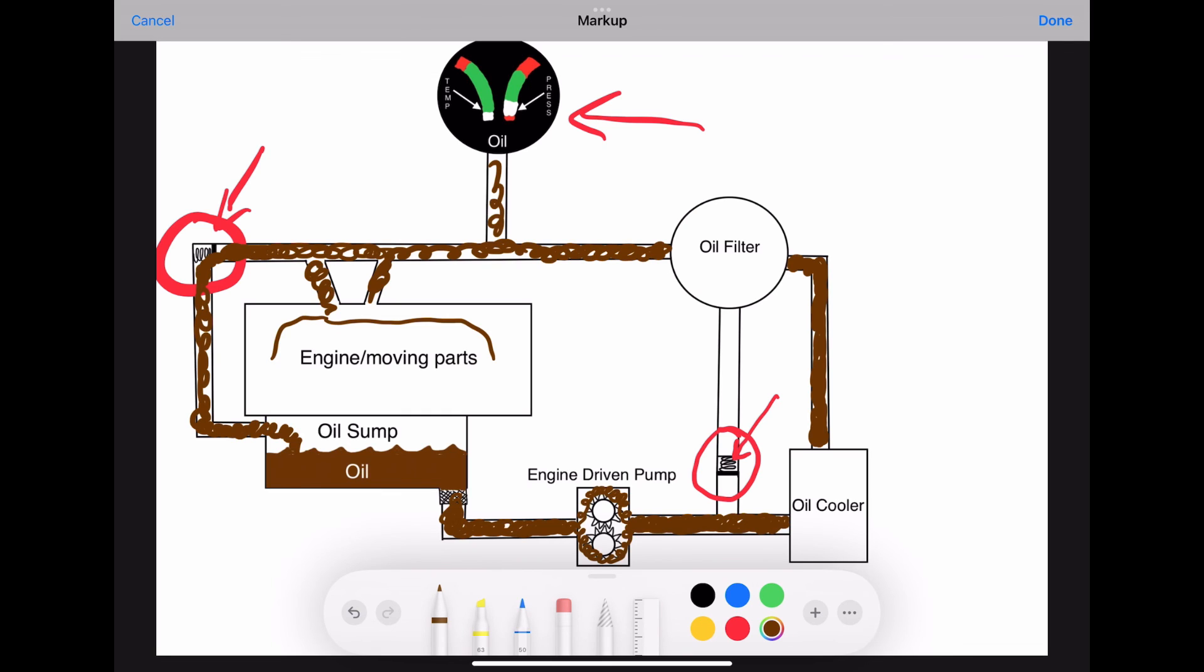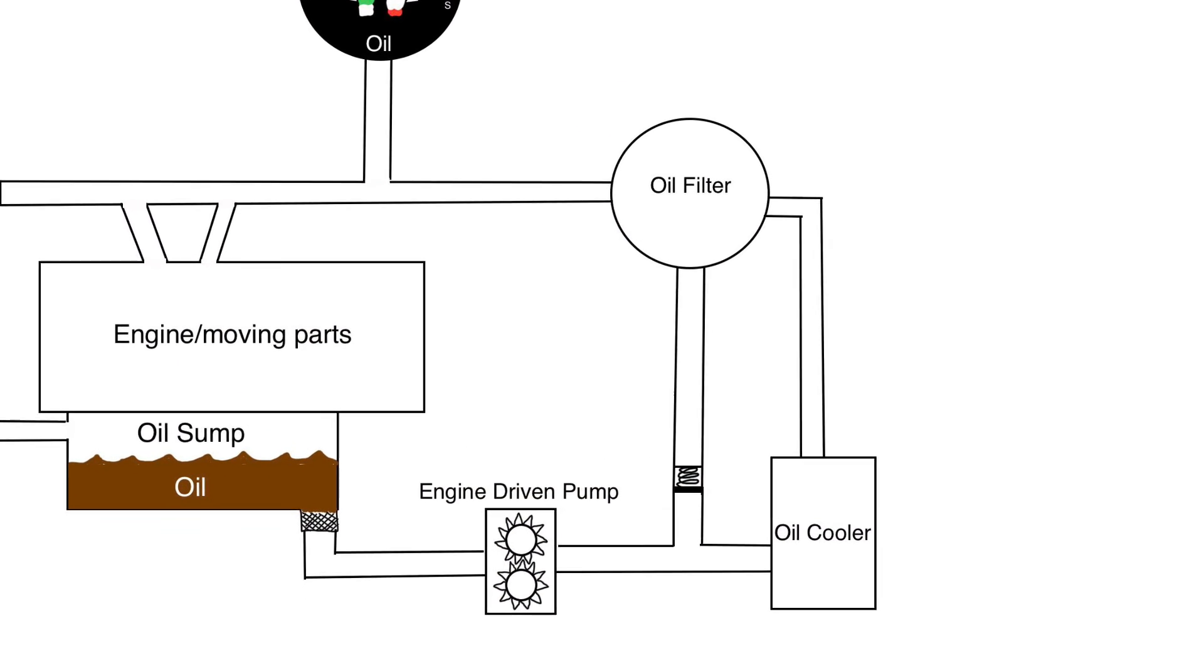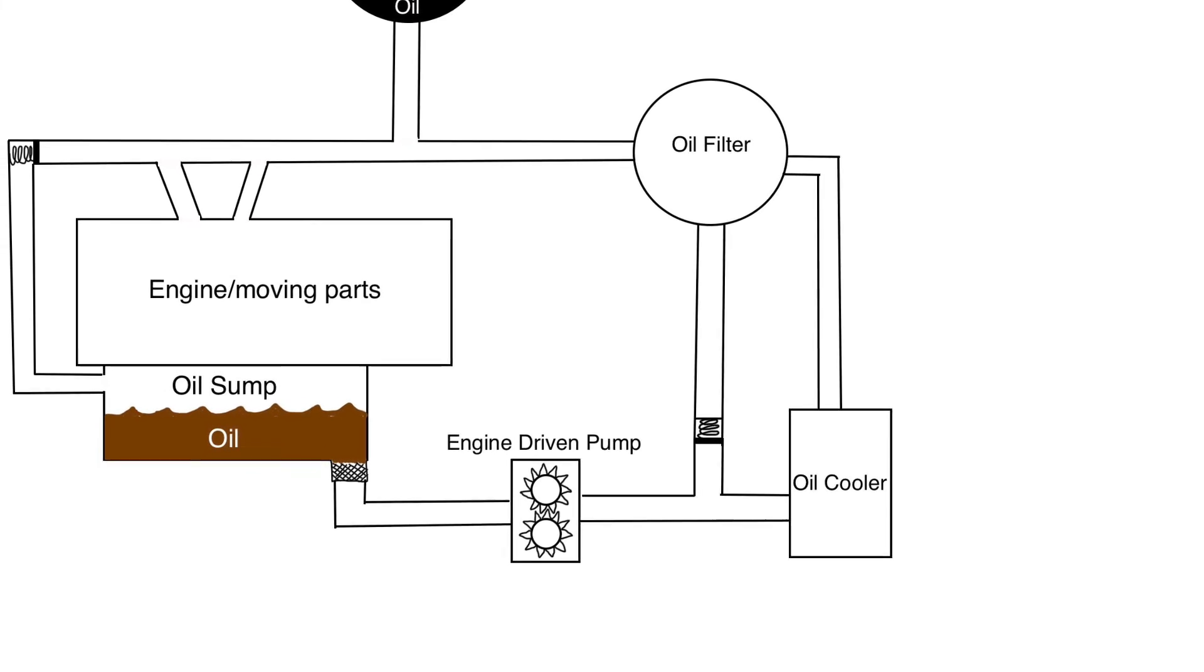And just one more thing I want to point out. Because we have a wet sump oil system, after the oil moves through the moving parts of the engine, gravity will then bring that oil through the bottom of the engine and back into the oil sump, where its journey is now complete. And then the whole thing just happens over and over again.